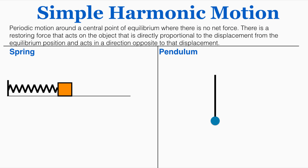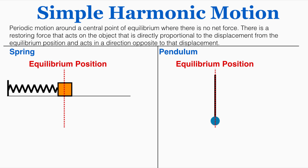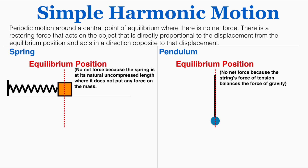Two of the most common objects that occur in simple harmonic motion are the spring and pendulum, and both of these have what's called an equilibrium position. At the equilibrium position there is no net force — that's one of the definitions of simple harmonic motion. With the spring, that's just the spring's natural length, so it doesn't put a push or a pull on the object. On the pendulum, the force of gravity is perfectly balanced by the force of tension. Any object in simple harmonic motion goes back and forth around an equilibrium position where there's no net force.